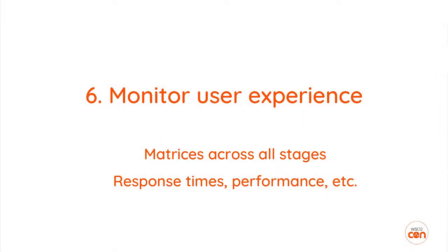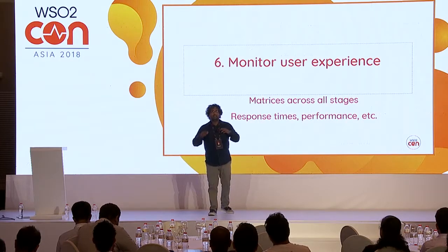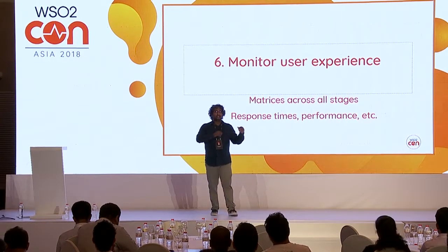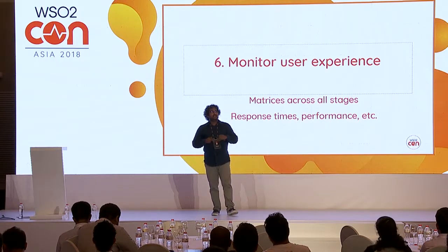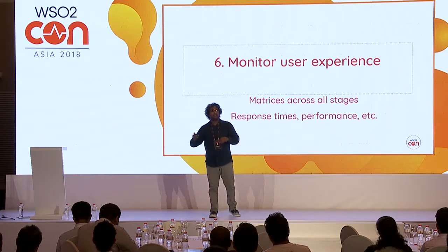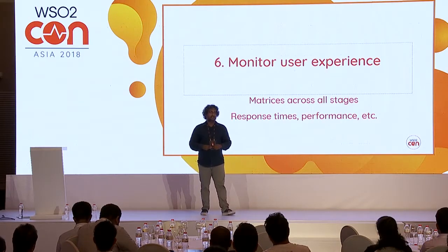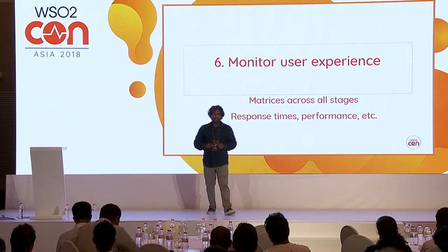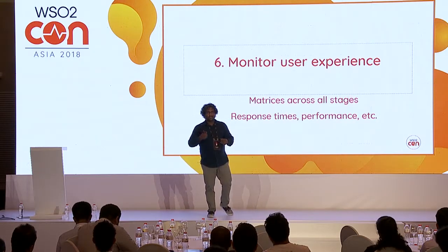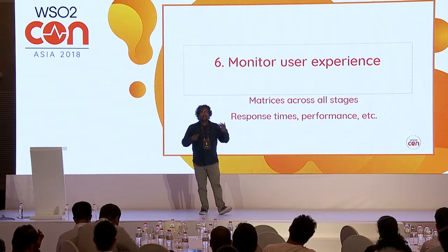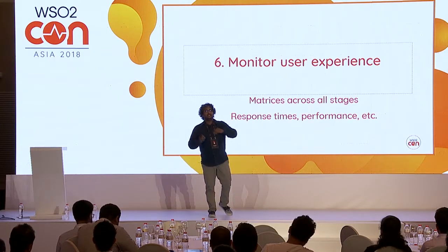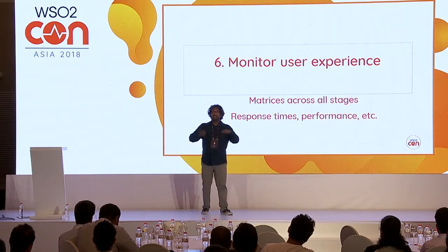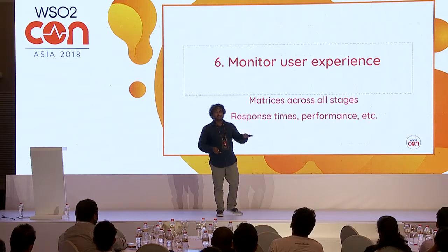Number six: monitoring user experience. This comes as part of adding visibility to your pipeline. Whatever changes you put into the pipeline must not cause any performance degradation in your production setup. To guarantee this, you need to simulate user activities in earlier stages of the pipeline and monitor things like response times and performance, so that the changes you promote into production don't degrade the performance of the existing system.